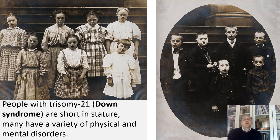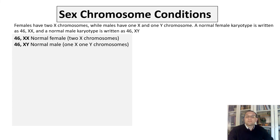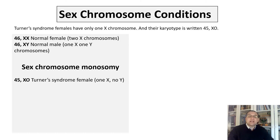We can guess that the much prolonged prophase I of the human oocyte may have something to do with this — the oocyte would have been arrested at this stage for 35 years. So far we looked at autosome conditions. Now we're going to look at sex chromosome conditions. Females have two X chromosomes while males have one X and one Y chromosome. A normal female karyotype is written as 46,XX and a normal male karyotype is written as 46,XY.